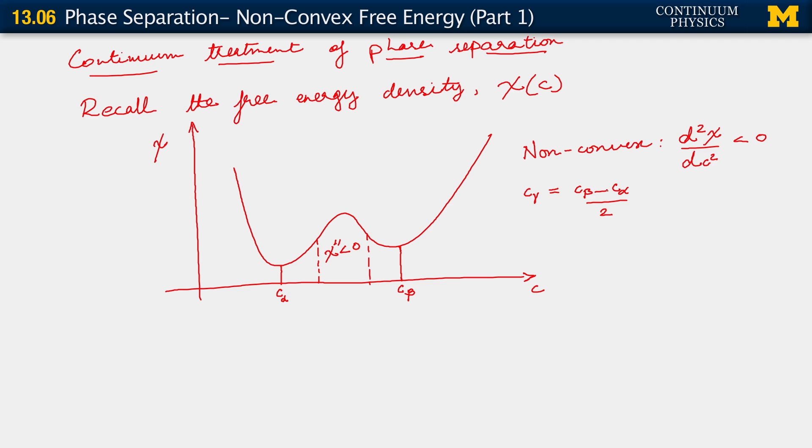Clearly c_beta is greater than c_alpha, and I'm defining c_gamma to be one half of the difference. Here's why phase separation tends to happen when you have this type of free energy. Because of the physical tendency for free energy to be minimized, the system is going to try to attain a concentration which gives it a minimum free energy. Clearly, c_alpha and c_beta are free energy minimizers.